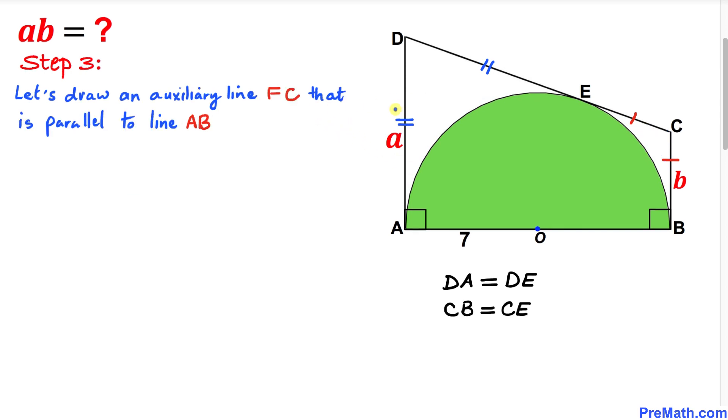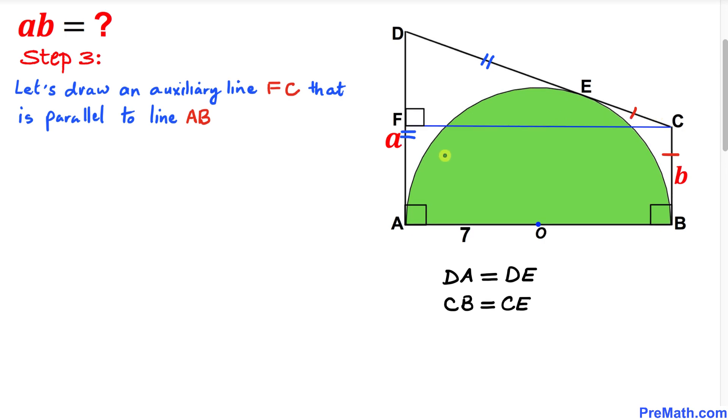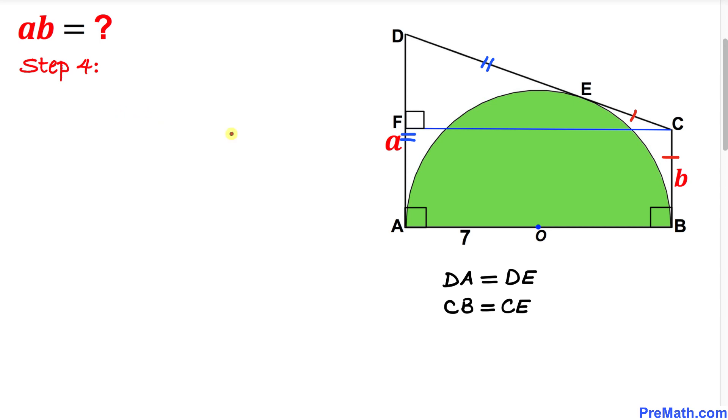Here's our next step. Let's draw an auxiliary line FC that is parallel to line AB. Suppose point F is on this line, then this is our line FC. Here's our nicer looking diagram. As a result, we got this right triangle DFC.